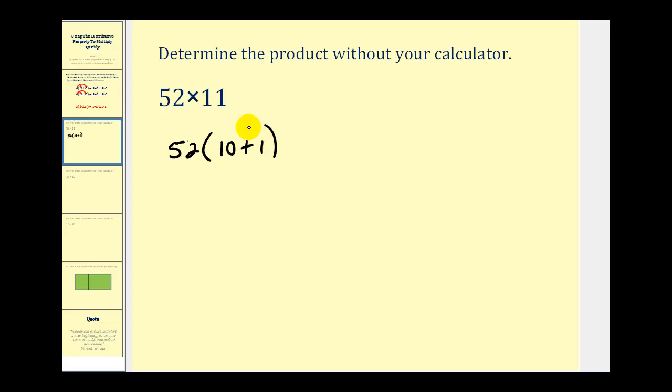The reason that's helpful is it's a lot easier to multiply by 10 and by 1 rather than by 11. 52 times 10 would be 520 plus 52 times 1 would be 52. So the idea is if you can envision this and you can find these products in your head, you could then find this sum to find the original product.